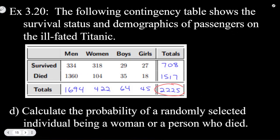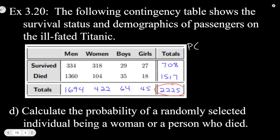For Part D, calculate the probability of a randomly selected individual being a woman or a person who died. So probability of woman or died. Now this one, we would have probability of woman plus probability of died, and then minus probability of woman and died. So we've got to use our more general formula because these events are not disjoint.